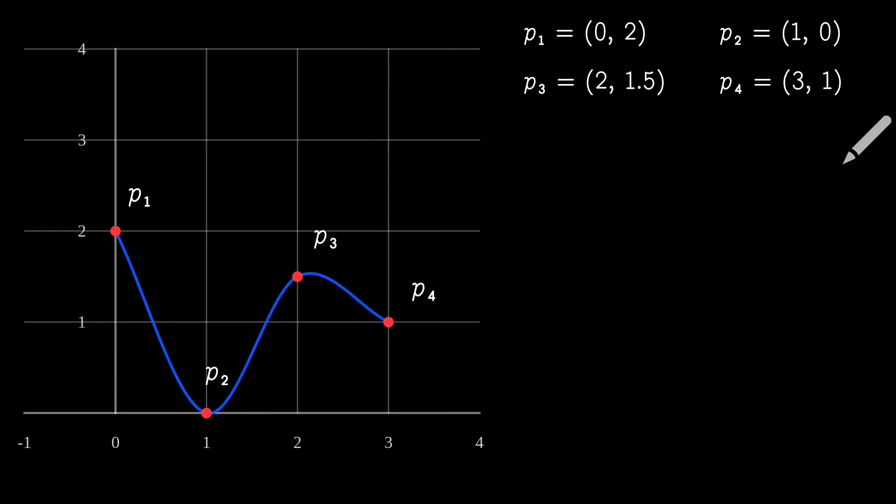In mathematics, this set of curved lines is called a spline, and is constructed piecewise. Which means that first we create this piece, then this piece, and then this piece.